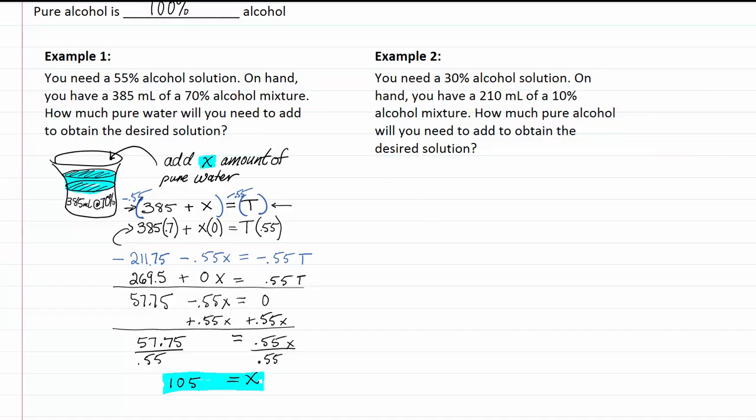In example two, we see that you need a 30% alcohol solution. On hand, you have 210 milliliters of a 10% alcohol mixture. How much pure alcohol will you need to add to obtain the desired solution?